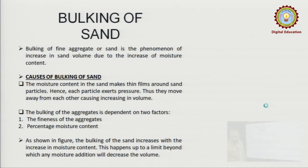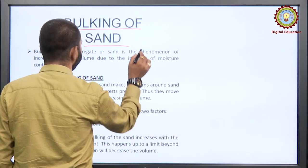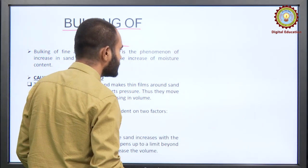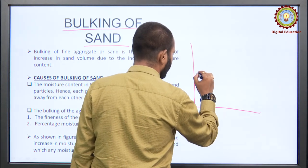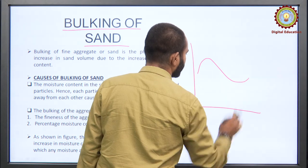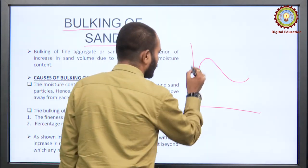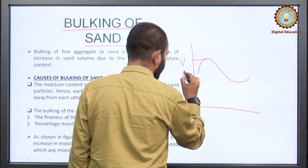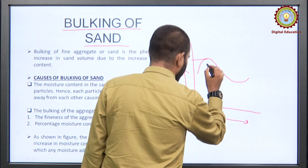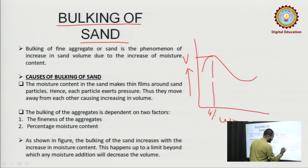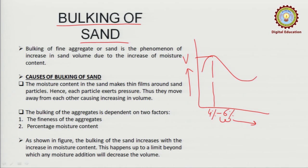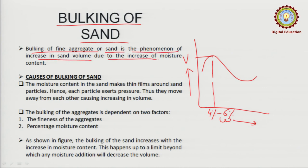Now, a very popular phenomenon: bulking of sand. Something like a graph is obtained — the X-axis is water content and the Y-axis is volume. This generally occurs between 4 percent to 6 percent water content. This phenomenon occurs particularly in sand only. Bulking of fine aggregate or sand is the phenomenon of increase in sand volume due to increase in moisture content.